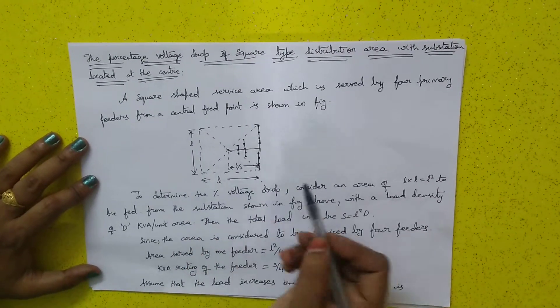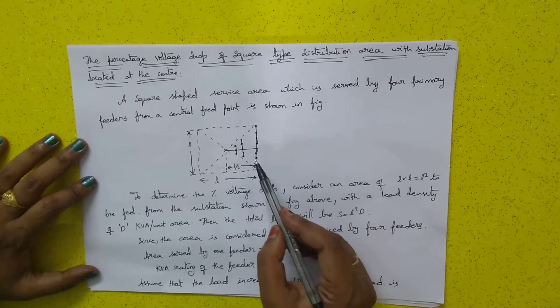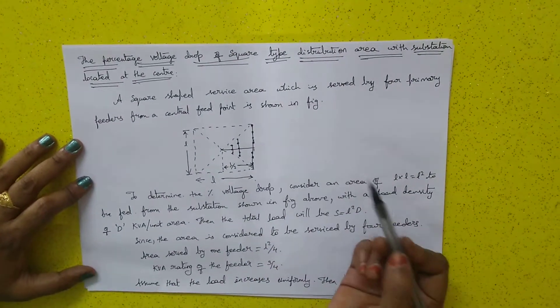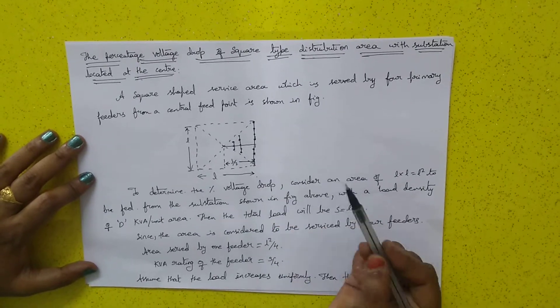L-square, to be fed from the substation as shown in this figure, with a load density of d kVA per unit area. The total load will be s equal to L-square d.